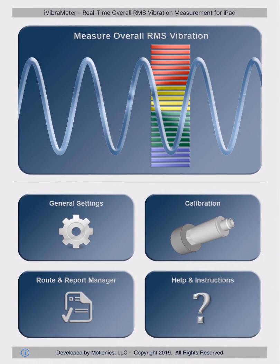Hello everyone! In this video, I'll be going through the main features of Motionix's i-Vibrometer app. This is an iPad app connecting to Motionix's two-channel wired vibration analysis kit and their single-channel vibration kit. It is used to measure machine overall vibration levels.